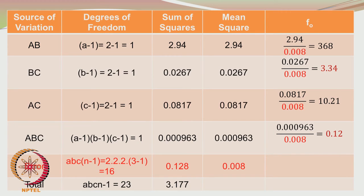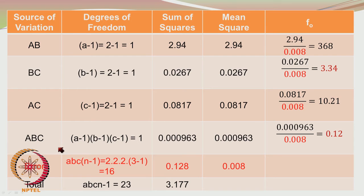To summarize: insignificant factors have high p-values and significant factors or interactions have very low p-values. Going back to the table, BC with F = 3.34 and ABC with F = 0.12 were both smaller than 4.49, confirming they are insignificant. Please remember this principle.